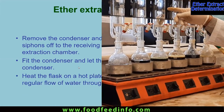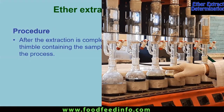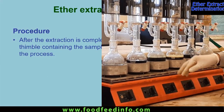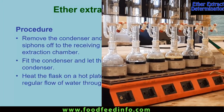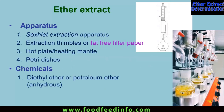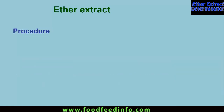Heat the flask on a hot plate for about four hours with regular flow of water through the condenser. After extraction is complete, lower the heater and remove the thimble containing the sample, then recover the ether. To know whether extraction is complete, look at the ether color — normally ether is a colorless fluid, but when it extracts fat or oil the color becomes yellowish or light colored. Sometimes if the sample is a green forage, the color might be green due to the presence of chlorophyll or extraction of pigment.